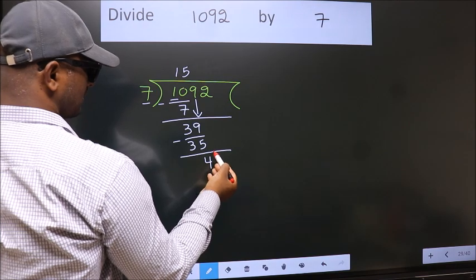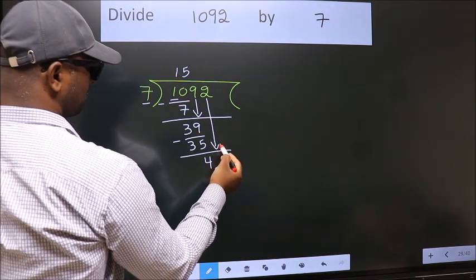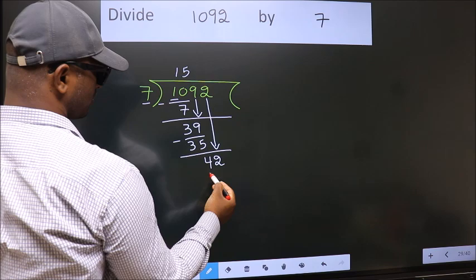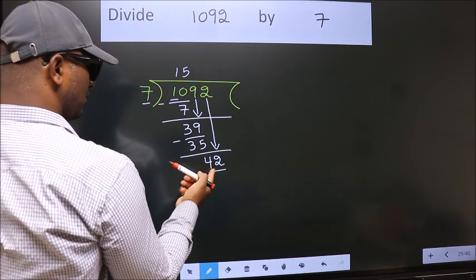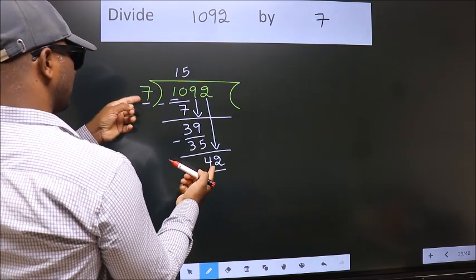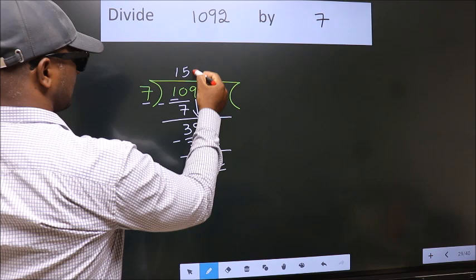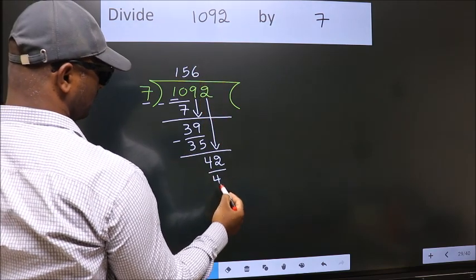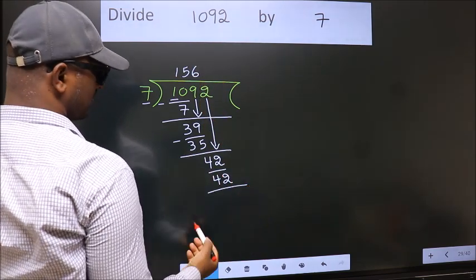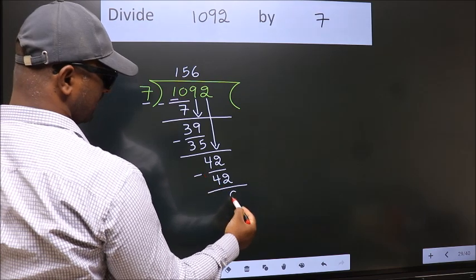After this, bring down the beside number. So, 2 down. 42. When do we get 42? In the 7 table, 7 times 6 is 42. Now we subtract. We get 0.